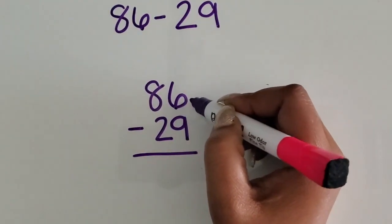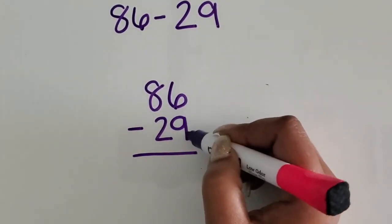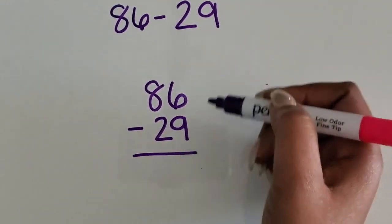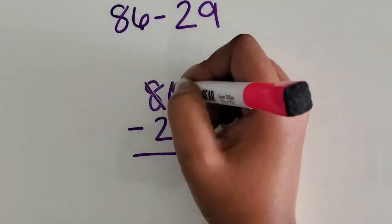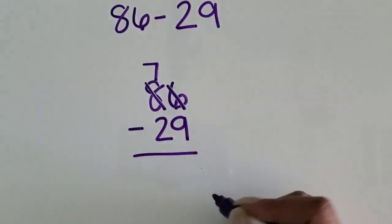We have 6 1s here. We don't have enough 1s to take away 9 1s in order to get a positive number, so we are going to regroup a 10 from the 10s place. If I use one of the 10s, that will leave me with 7 10s.